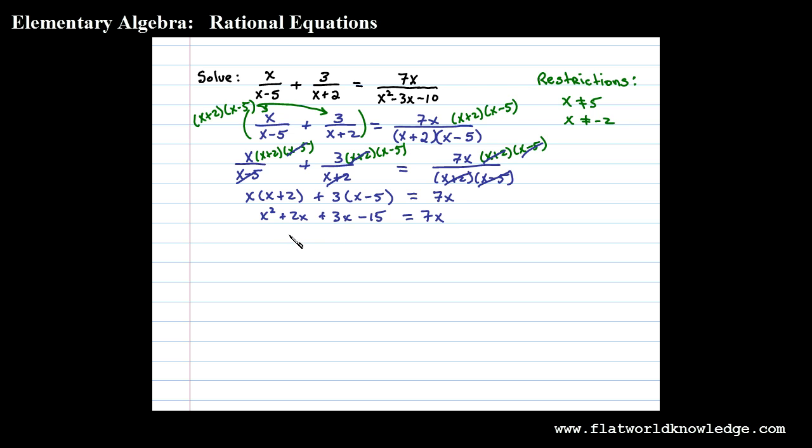On the left we have same side like terms 2x and 3x. That adds up to 5x minus 15 plus 7x. For a quadratic we need to get this equal to 0 in standard form. So we'll subtract 7x on both sides. That leaves us with x squared minus 2x minus 15 which can be solved by factoring.